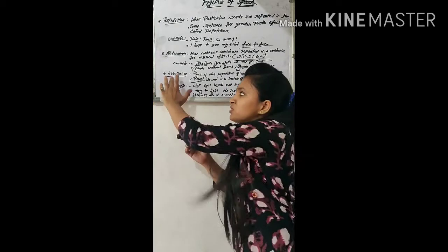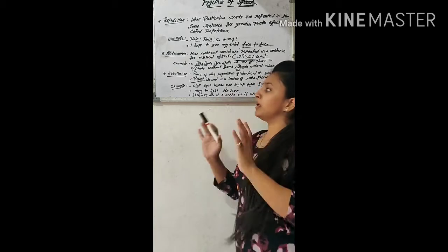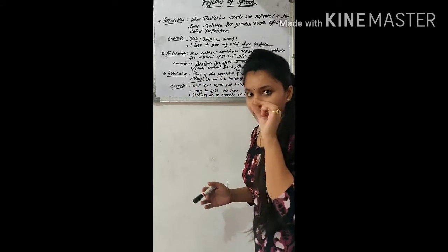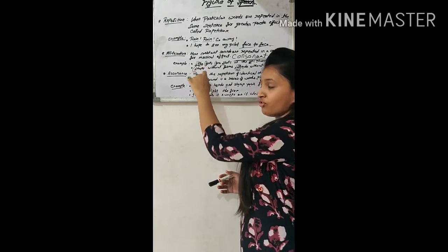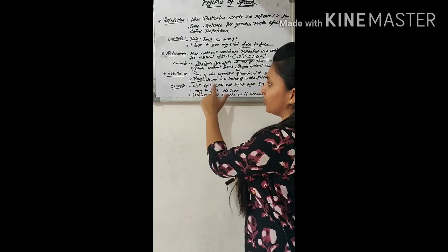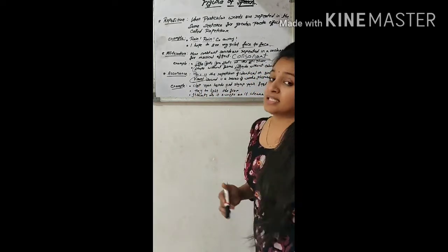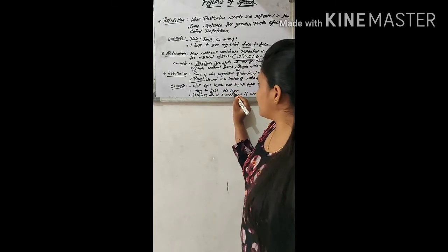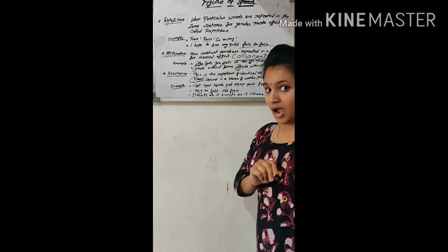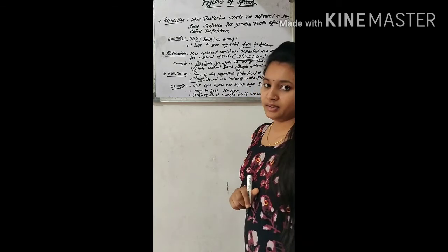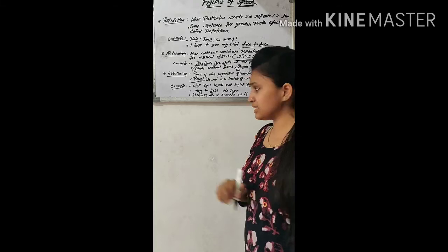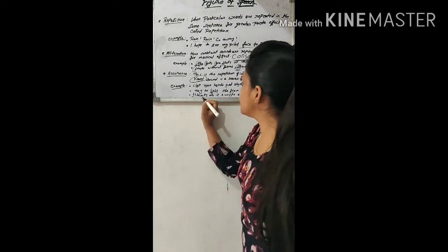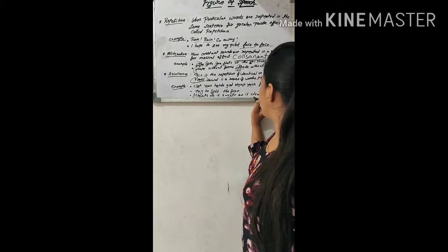Simply put, whenever a vowel is used within a word at a consistent position, it is considered assonance. Another example: 'Try to light the fire' — 'light' has 'i', 'fire' has 'i'; the vowel 'i' is repeated, so this is assonance.